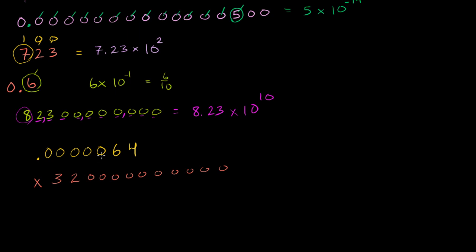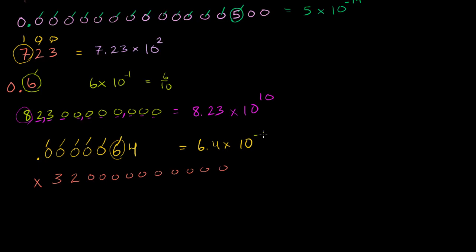So the small number — how can we write it in scientific notation? It would be 6.4 times 10 to the... counting 1 through 6 places to the right of the decimal, including the 6. So times 10 to the minus 6.